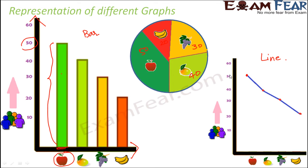Apple corresponds to this point and 50 students, so this is the point for apple where both lines meet. Similarly for mango at 40. We draw the points and join them to form a line, creating a line graph.